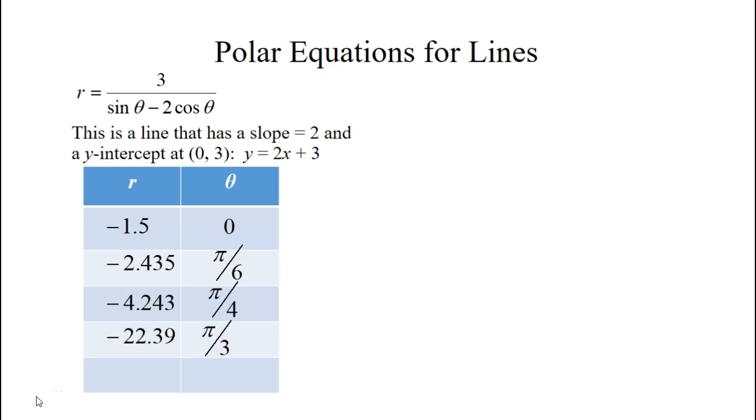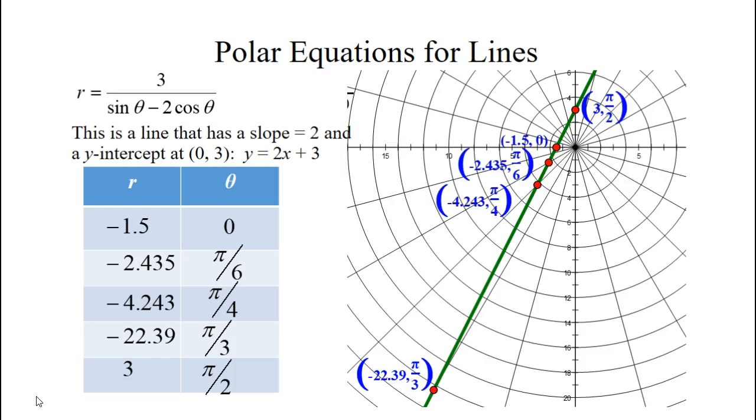At pi over 3 we get approximately negative 22.39, and at pi over 2 we get 3. So I went ahead and plotted those points, and you can see that they all are in line. They created the line y equals 2x plus 3.